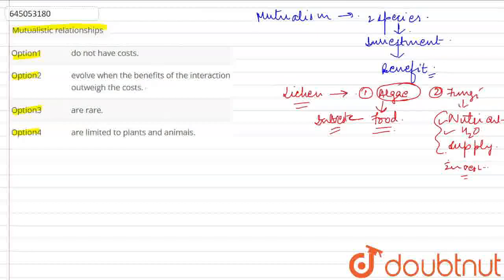If we look at option 2, it says 'Evolve when the benefits of the interaction outweigh the cost.' So option 2 is the right answer.